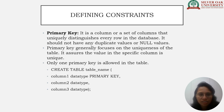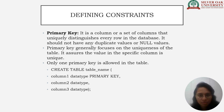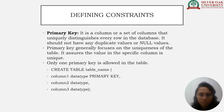Let's talk about constraints in Database Management Systems. The Primary Key is a column or set of columns that uniquely distinguishes every row in the database. It should not have any duplicate values or null values, and it focuses on the uniqueness of the table. Only one primary key is allowed per table, and every table needs one. The syntax is: CREATE TABLE table_name (column1 datatype PRIMARY KEY, column2 datatype, column3 datatype). It is important to define the primary key while creating the table.